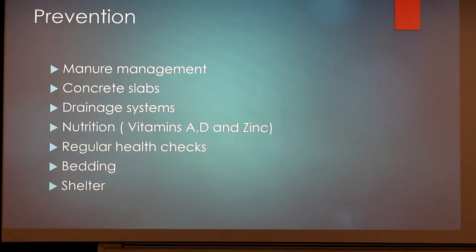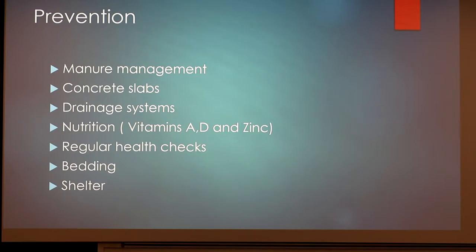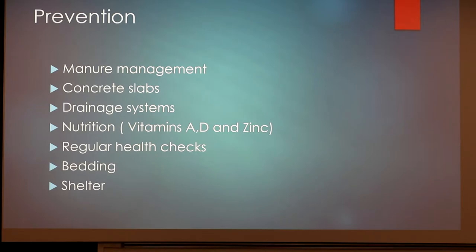Moving on to prevention — how to prevent these issues from happening. Manure management is huge; if you have a cut and you're stepping in manure, that's bacteria everywhere. Concrete slabs are huge, and a lot of people place these next to feed bunks or watering pins where animals are often. Drainage systems help get that muddy water and bacteria out as much as you can. Nutrition also matters — it's good to have vitamins A and D and zinc in your feed rations. Regular health checks: if you can't check animals every day, try every other day, looking for limping or other symptoms. Bedding and shelter are especially huge in winter and spring when condition changes are frequent.